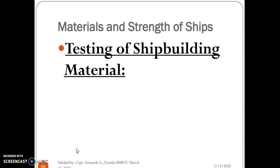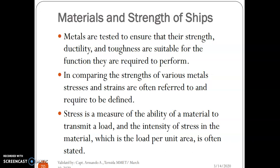Okay, so once again class, good day. Now we are going to discuss the testing of ship building material. First, metals are tested to ensure that their strength, ductility, and toughness are suitable for the function they are required to perform. In comparing the strengths of various metals, stresses and strains are often referred to and required to be defined.